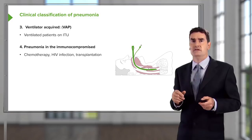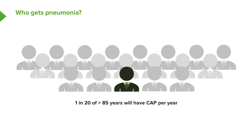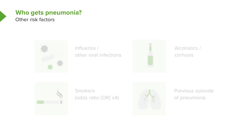Who gets pneumonia? Essentially everybody can, but it is particularly common in two age groups: the very young — under fives, where it is the commonest cause of death in the developing world — and the elderly, with an almost exponential increase in risk after age 65, reaching about 5% per year in those over 85. Risk factors also include previous influenza or viral infections, which impair the immune response to bacteria, making secondary bacterial pneumonias very common.